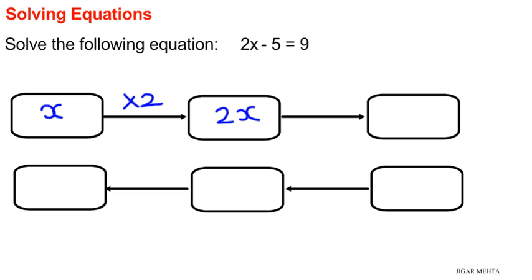Next I need to subtract 5 to get 2x minus 5. Now this completes the left hand side of the equation. Now I'm going to use the lower part of the flowchart just to go backwards and get my answer.